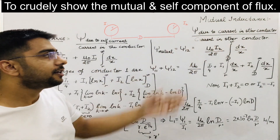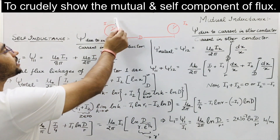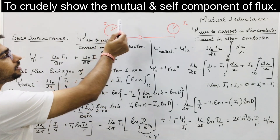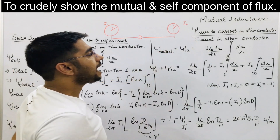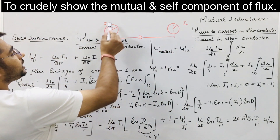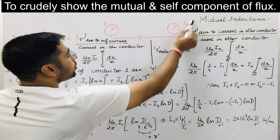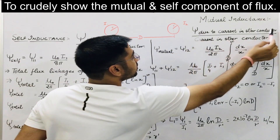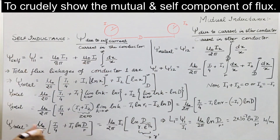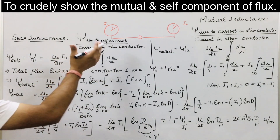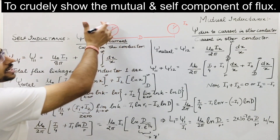So how do we find these? First we find the flux linkage. To find the mutual inductance of conductor 1 due to the current i2 in the second conductor, we calculate the flux linkage of conductor 1 due to current i2 and divide by i2. For self inductance, we find the flux linkage due to current i1 and divide by i1.